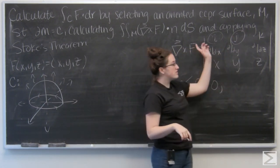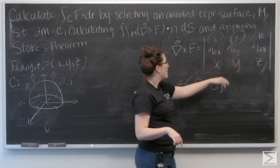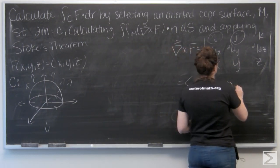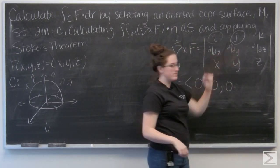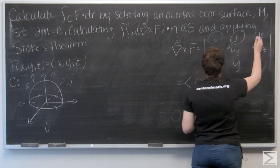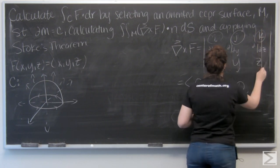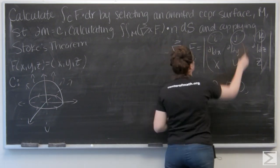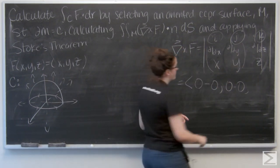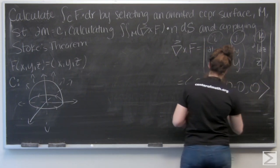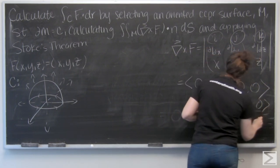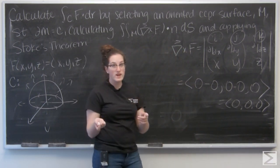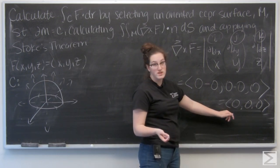Now for k, cutting the rightmost column, the determinant of that two-by-two matrix is again just zero. So the curl of F is the zero vector. No matter what I get for my normal vector, when I dot it with this, I'm just going to get zero.